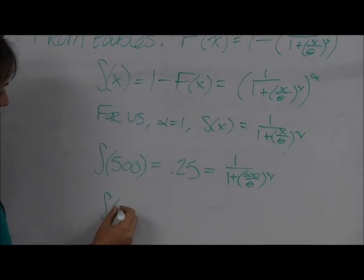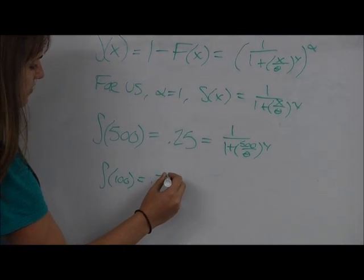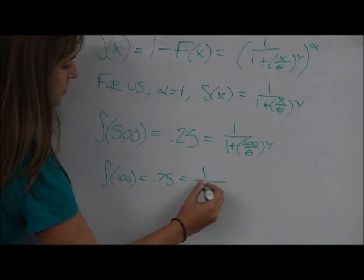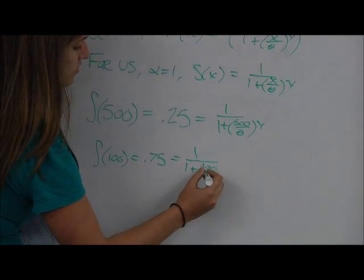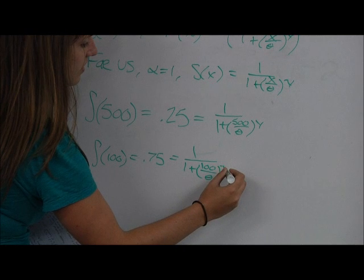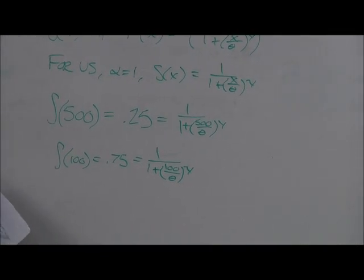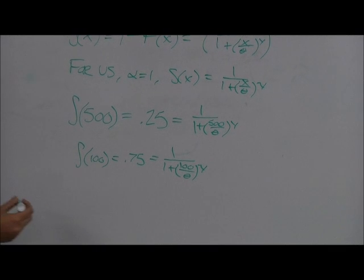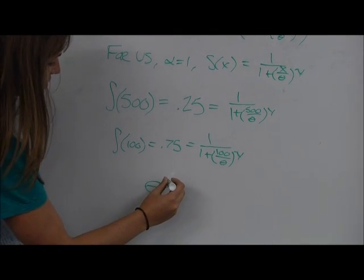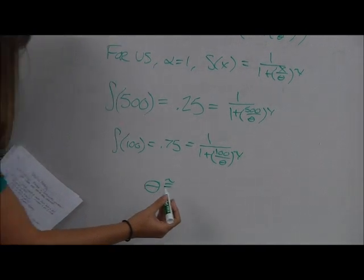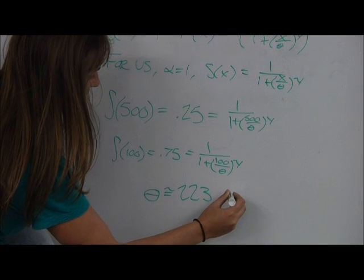Similarly, we have that S of 100, again by our givens, is equal to 0.75, which is 1 over 1 plus 100 over theta, raised to the gamma. And this is a system of equations that you can solve using your techniques that you learned in high school. And what we get is that theta is about equal to 223. And we're done.